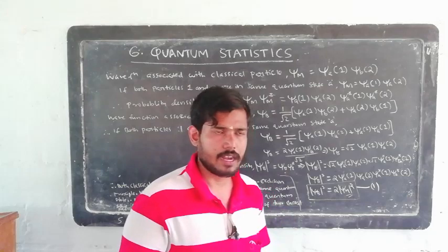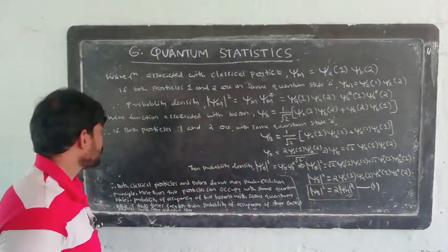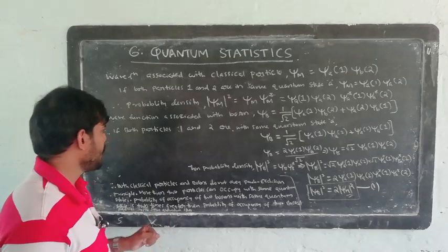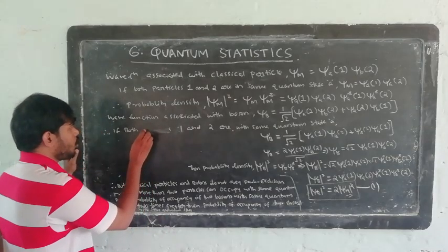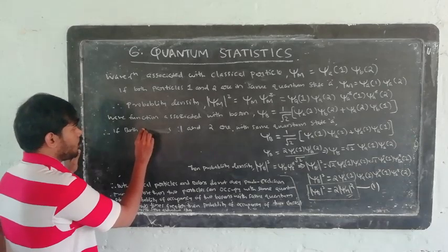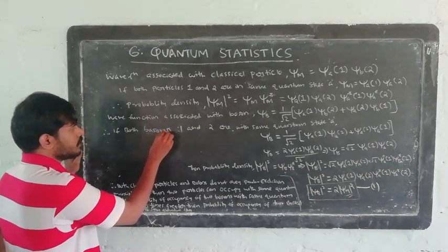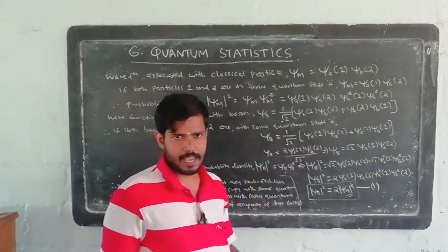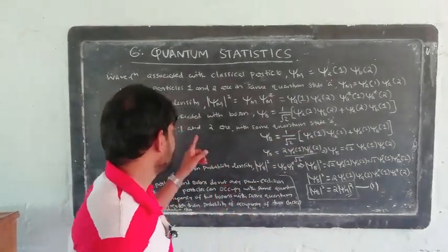Because two classical particles can occupy the same quantum state. Now consider bosons: two bosons can exist in one quantum state. If both bosons — particle 1 and particle 2 — are in the same quantum state, then two bosons occupy one quantum state.